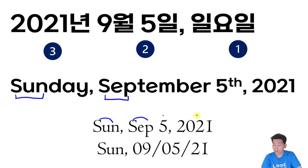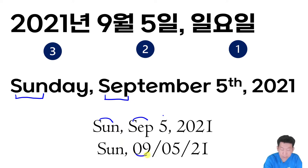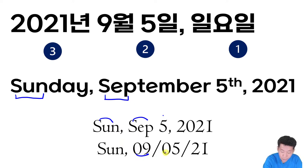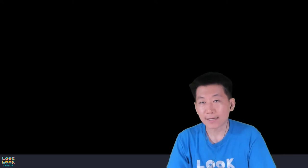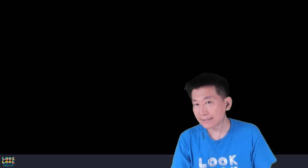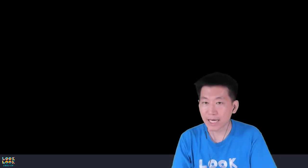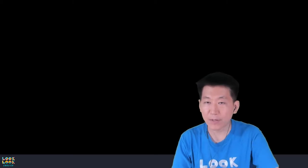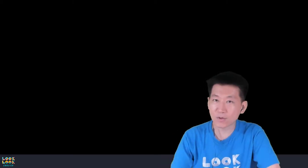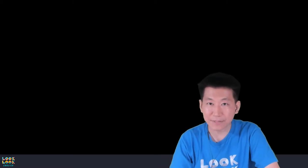아니면 이렇게도 괜찮습니다. Sunday 집어넣고요, 9월은 09 집어넣고요, 05, 1 집어넣고요, 그 다음에 2021 대신에 21이라고만 해도 됩니다. 이렇게 해서 우리가 날짜를 어떻게 표현할 수 있느냐, 날짜와 연도를 표현할 수 있는 방법을 살펴봤고요. 그것을 글로는 어떻게 적을 수 있는지도 간단하게 살펴봤습니다.